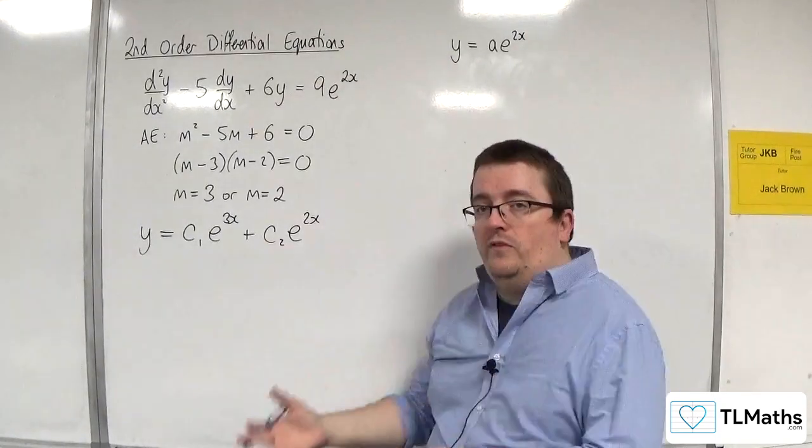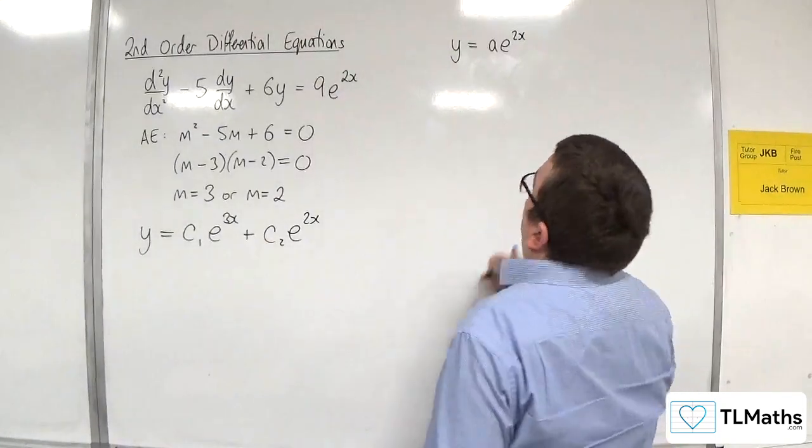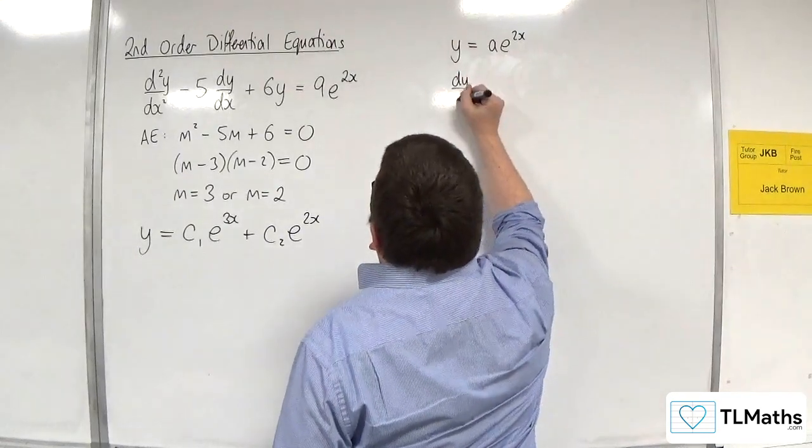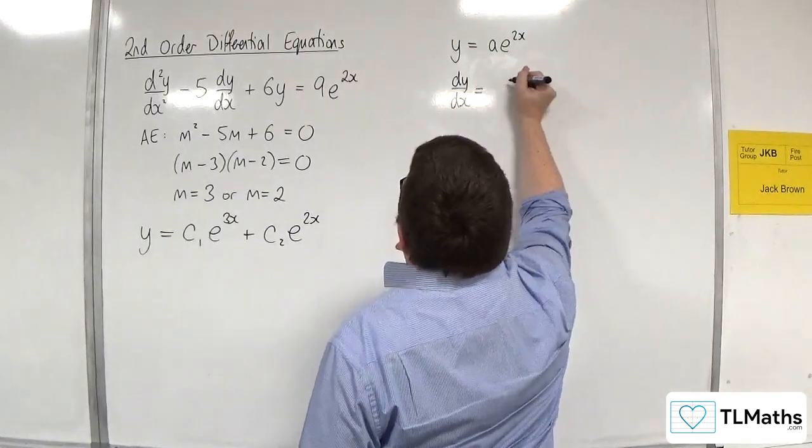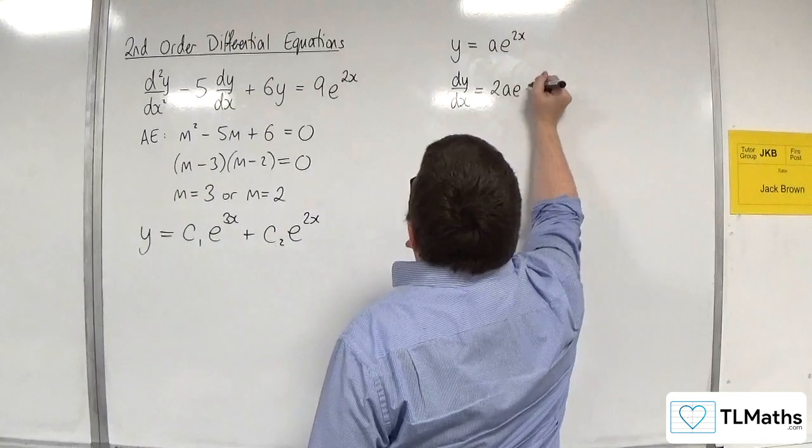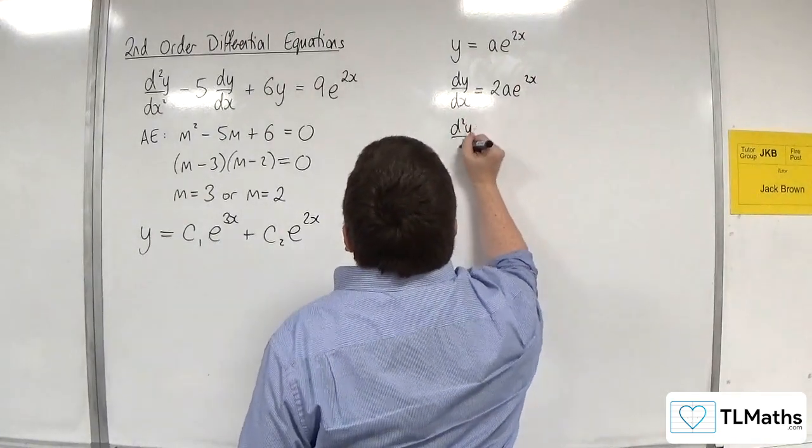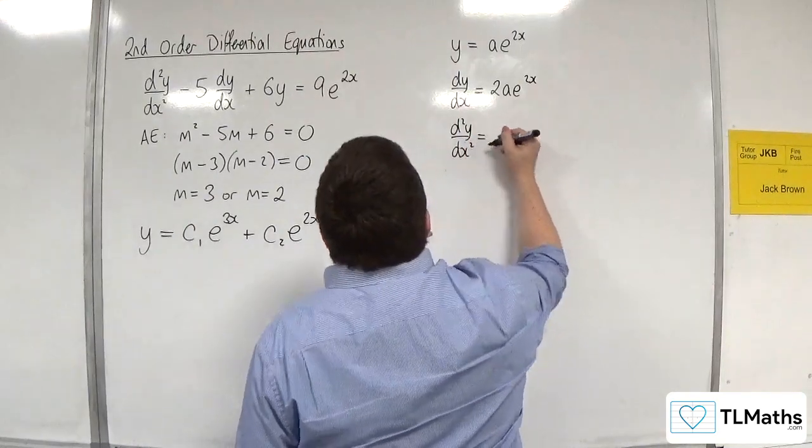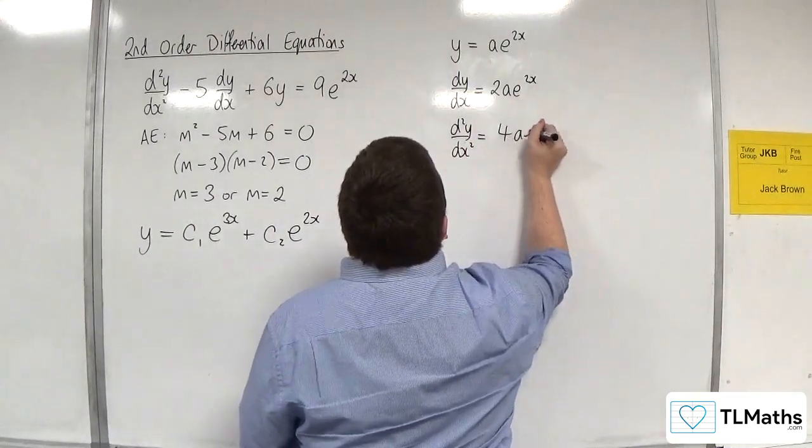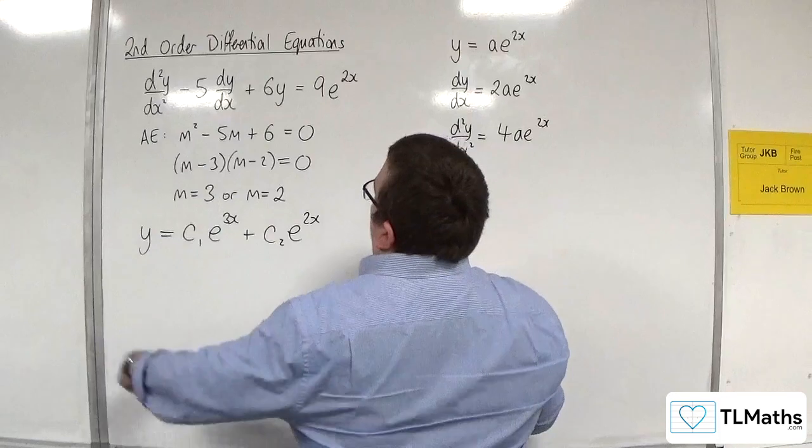So dy by dx would be equal to 2ae to the 2x, and d2y by dx squared would be equal to 4ae to the 2x. Let's pop it in.